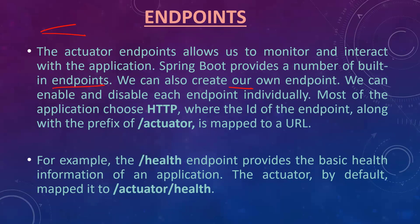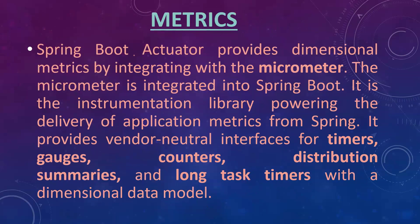We can also enable and disable each endpoint individually — that's the flexibility for configuration. Most applications use HTTP, where the ID of the endpoint along with the prefix of the actuator is mapped to the URL. For example, the health endpoint provides the basic health information of the application — whether it is in an up or down state.